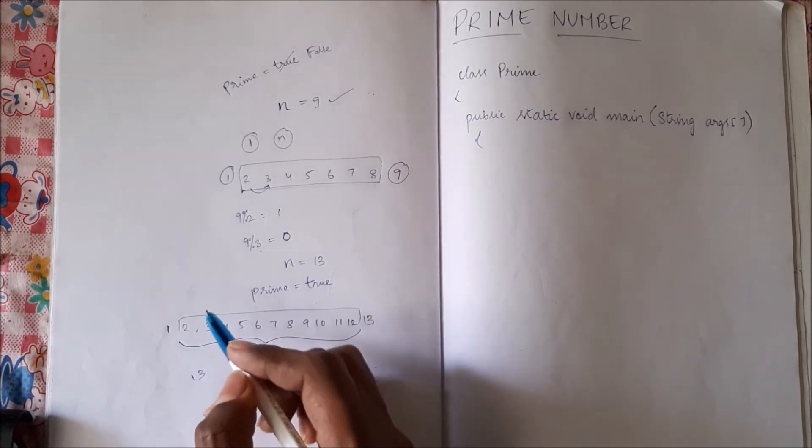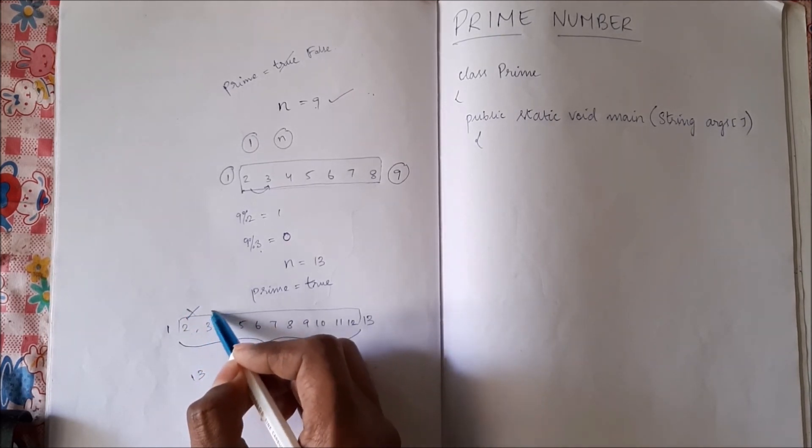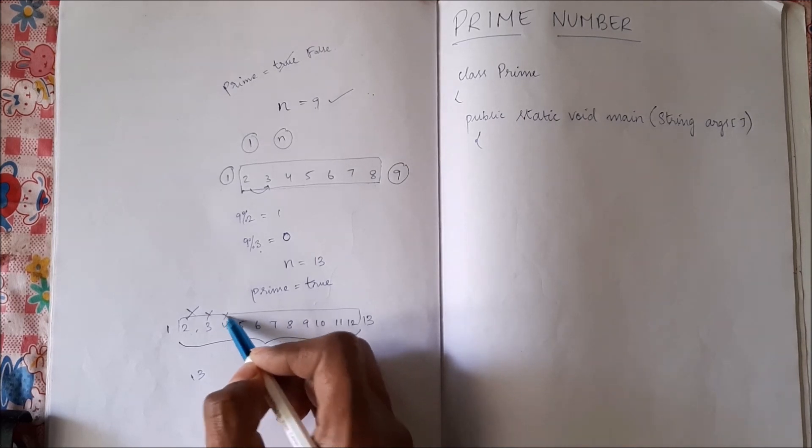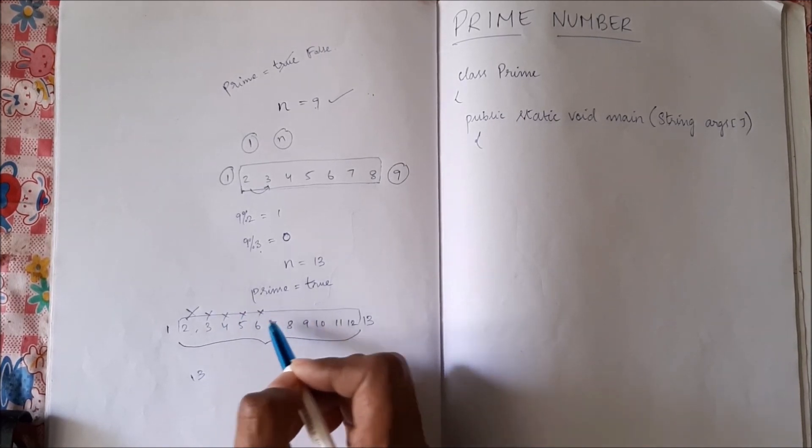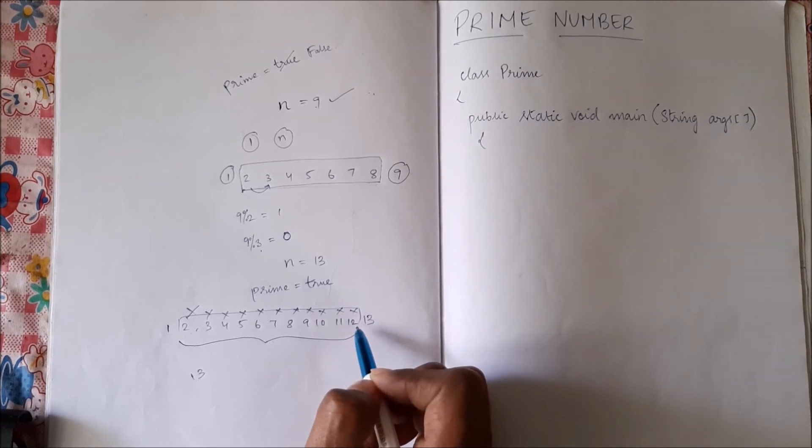So let us see. Is 13 divisible by 2? No. Is 13 divisible by 3? No. Is it divisible by 4, 5, 6? No. 7? No. 8, 9, 10, 11, 12? No.